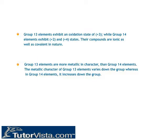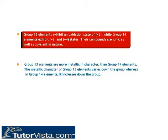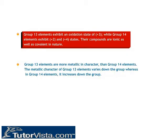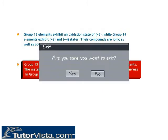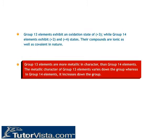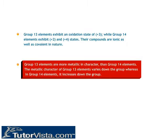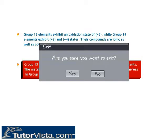Group 13 elements exhibit an oxidation state of +3, while group 14 elements exhibit +2 and +4 states. Their compounds are ionic as well as covalent in nature. Group 13 elements are more metallic in character than group 14 elements. The metallic character of group 13 elements decreases down the group, whereas in group 14 elements it increases down the group.